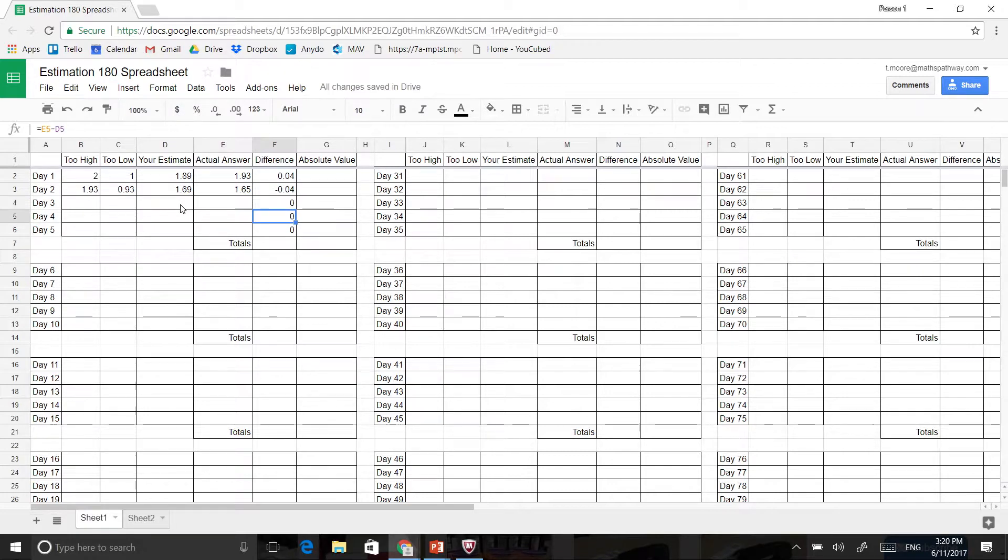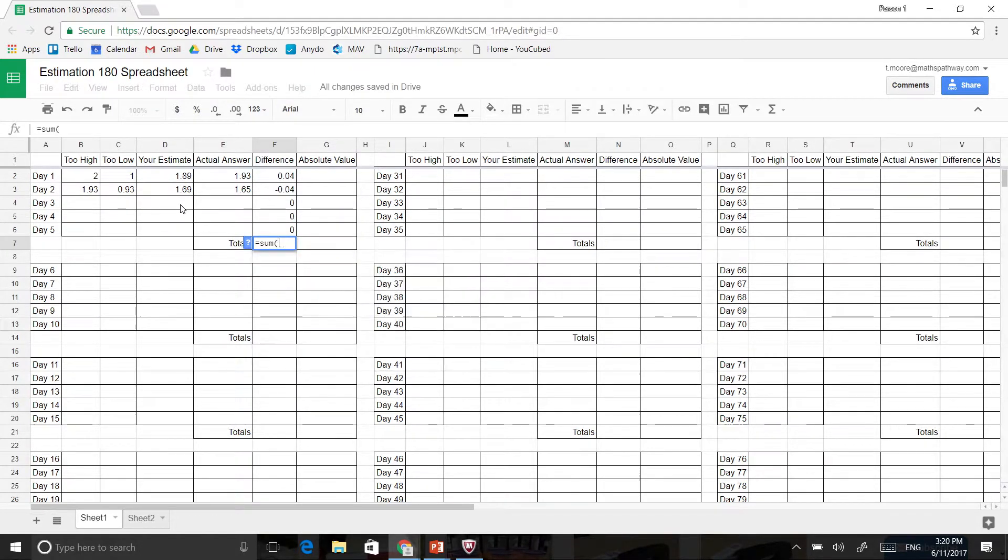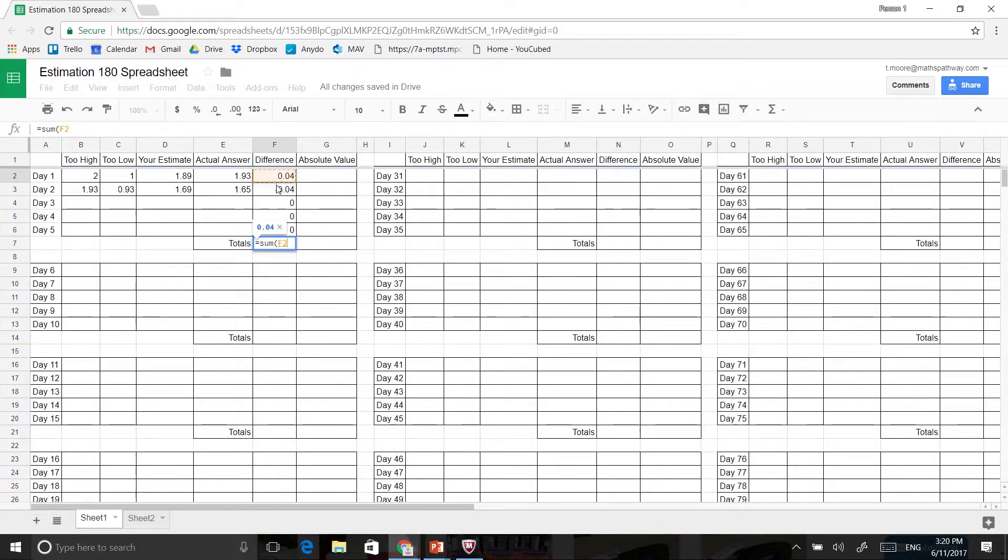Now, what I might want to do then is, I might want to calculate the sum, that is my total difference. So if I go equals, and if I want to calculate the sum of all of it, I can just go sum, and then brackets, and then I can actually highlight all of this. Now, my total difference should equal eight centimetres, but what happens is that doesn't actually work.